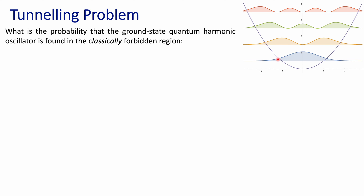One thing that is interesting in the quantum harmonic oscillator is the idea that past these turning points you're still going to find probability density, which immediately tells you that there's tunneling in these types of problems. This is very similar to what you have in the particle in the box with a finite potential barrier — you also find the idea of tunneling.